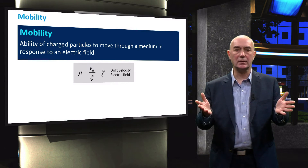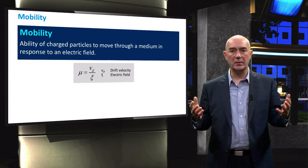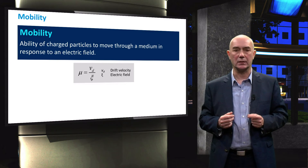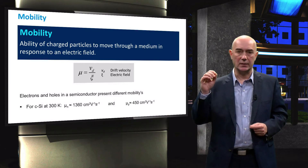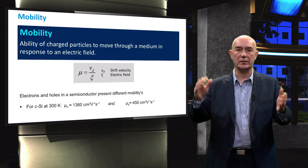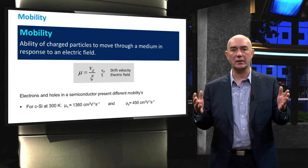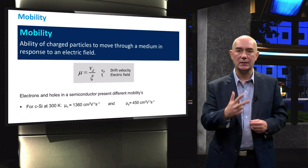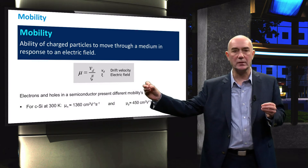The mobility of a charged particle is defined as its ability to move through a medium in response to an electric field. It can be determined as the ratio between the average, so-called drift velocity of the particle and the magnitude of the electric field. The drift velocity is temperature dependent. It is important to remember that even though electrons and holes are generated within the same semiconductor, their mobilities are considerably different. The mobility values for electrons and holes for crystalline silicon at room temperature show that the mobility of electrons is three times higher than that of holes. This means that under the same electric field, electrons will move faster through the silicon material than holes.